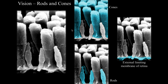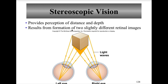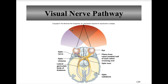Stereoscopic vision is produced because humans have binocular vision, so each eye produces a slightly different image for the brain to interpret. The visual cortex puts together a 3D image, providing perception of distance and depth, resulting from two slightly different retinal angles. For the visual nerve pathway, once the rods or cones are stimulated, a sensory impulse is carried on the optic nerve, cranial nerve 2, and then crosses at the optic chiasma, forming optic tracts that carry the impulse to the thalamus for direction to the primary visual cortex in the occipital lobe for the brain to interpret the image.